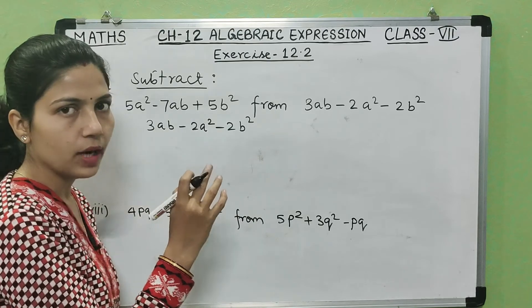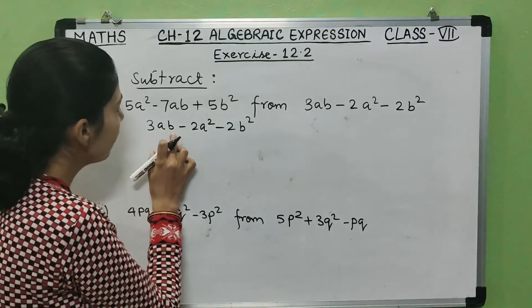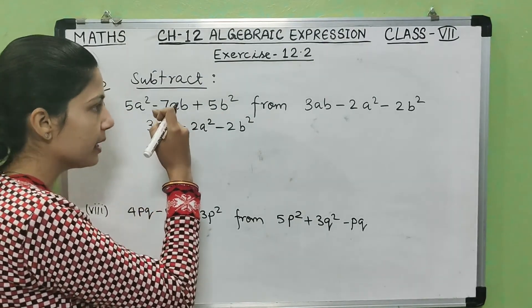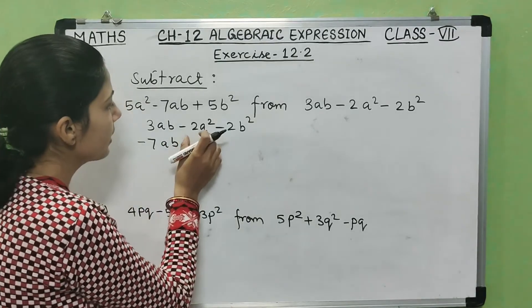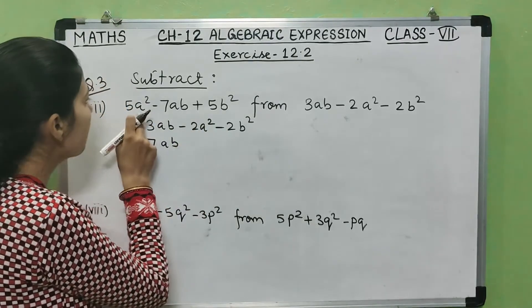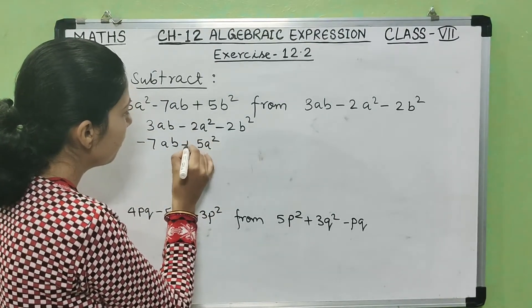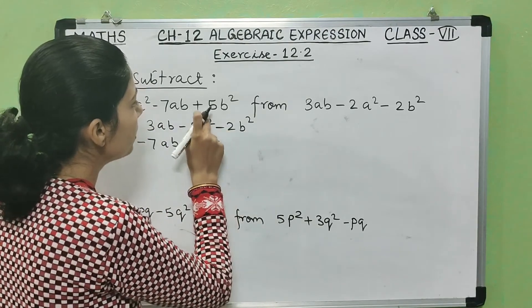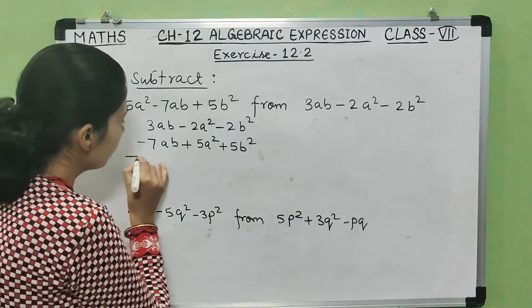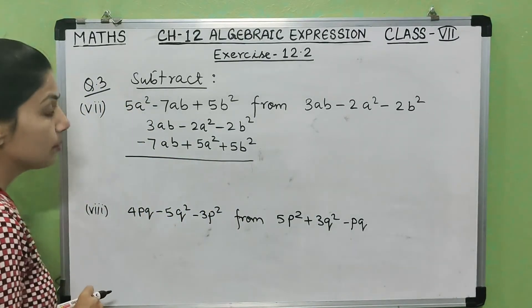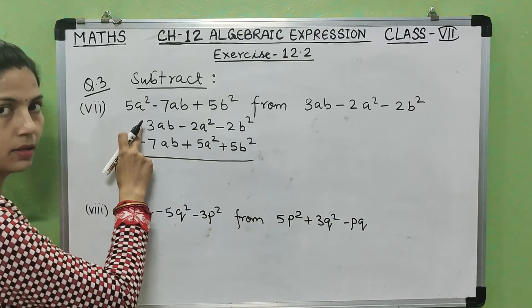We align like terms: ab terms, a² terms, and b² terms. Below we write minus 7ab, then 5a² (no sign means plus), then plus 5b². We subtract — meaning we change the signs of the lower expression and add.